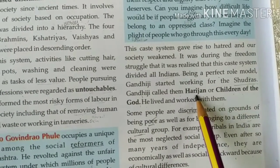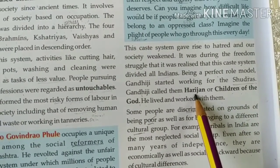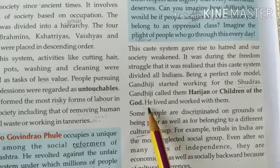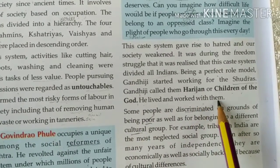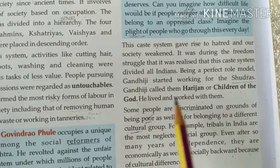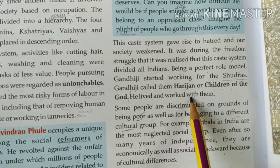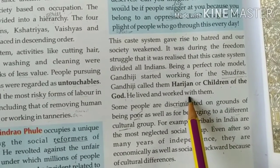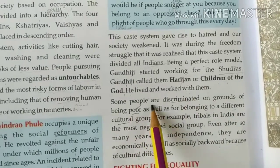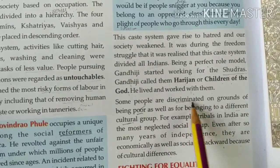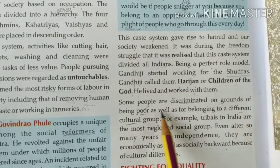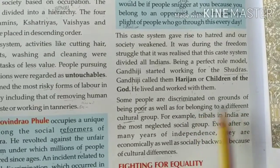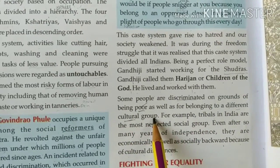Gandhi Ji called the lower caste people 'Harijans,' meaning 'children of God.' He lived and worked with them so that they could get equal value in society. Some people are also discriminated against on the grounds of being poor, as well as for belonging to different cultural groups.